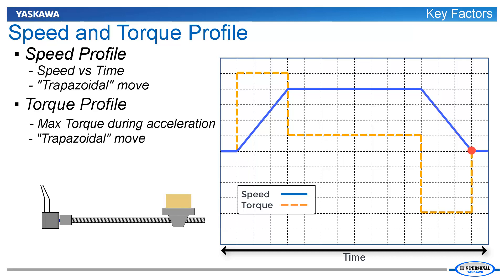Due to its shape, this is referred to as a trapezoidal speed profile, or a trapezoidal move. The torque at the beginning of the trapezoidal move is highest because mechanical friction must be overcome and because the load must be accelerated from rest. This point of highest torque is called the max torque.